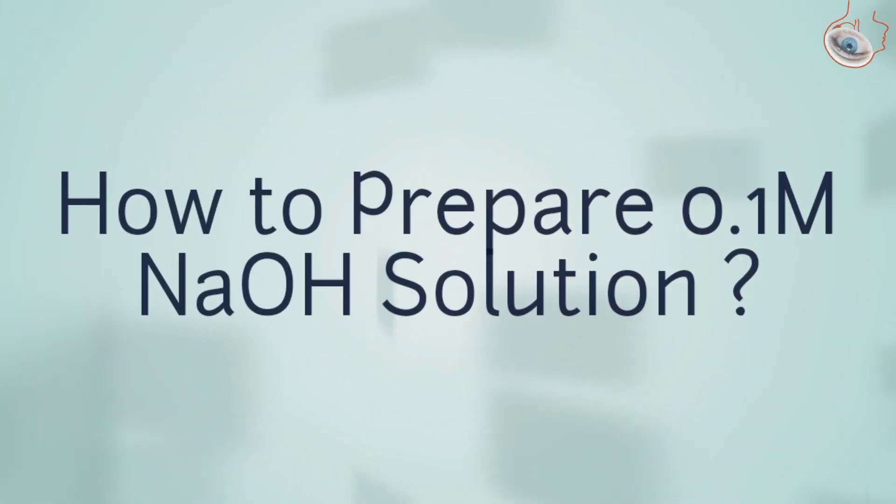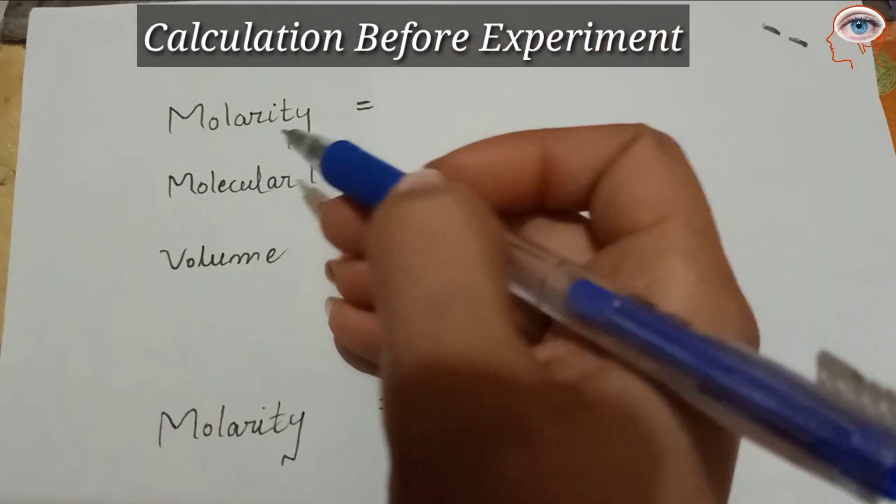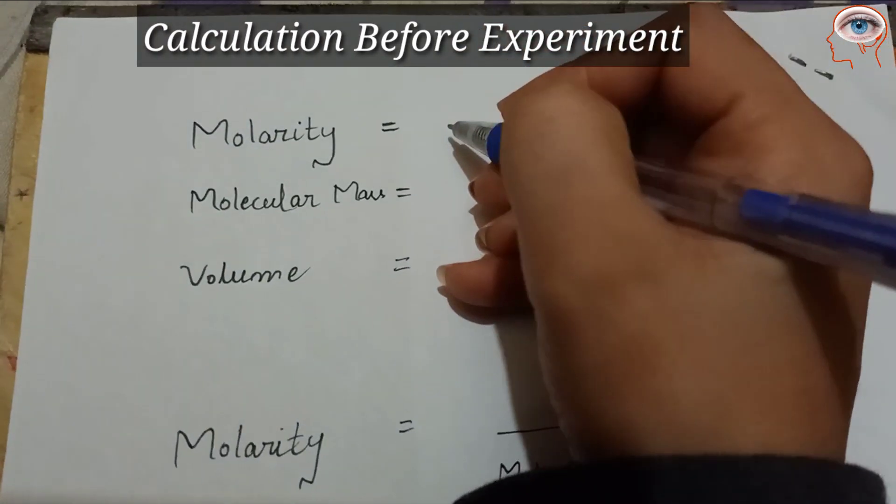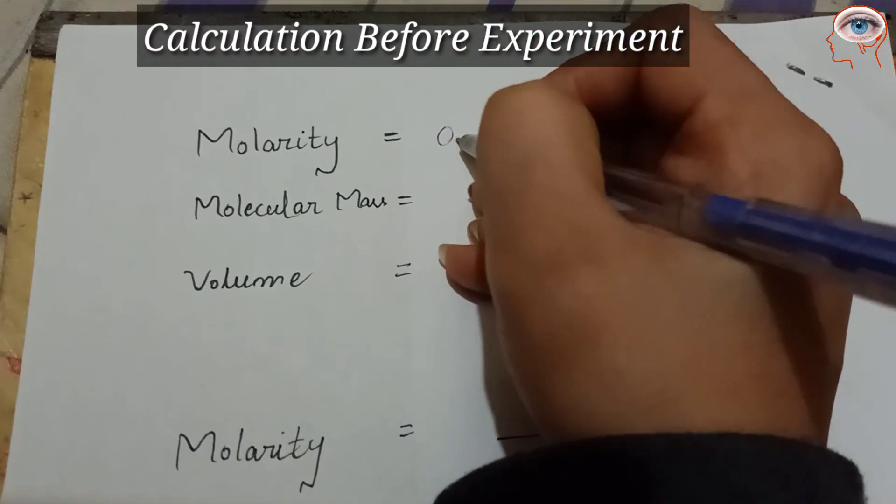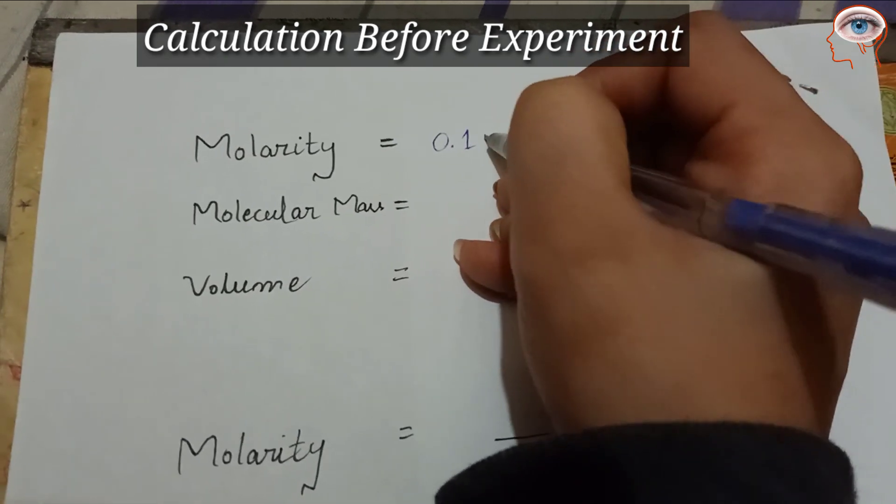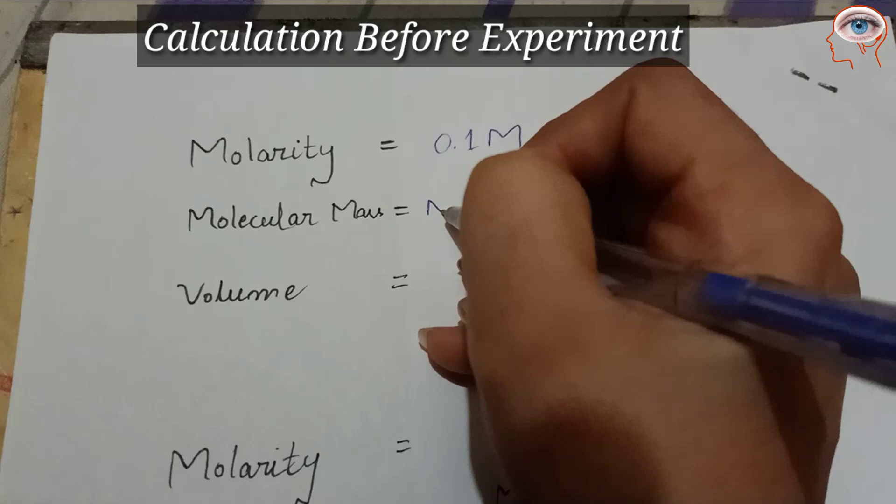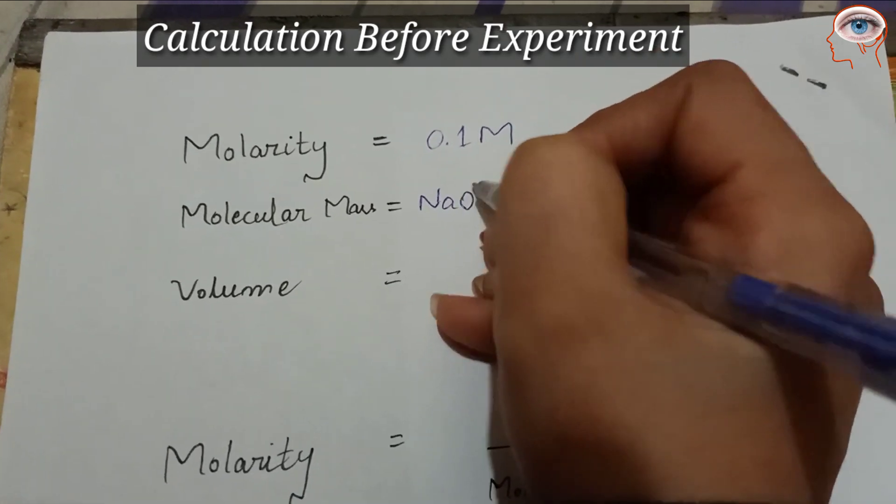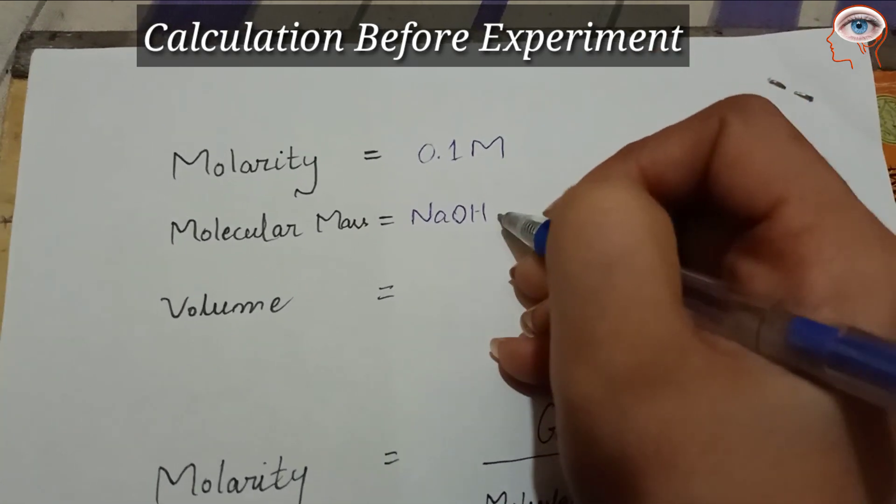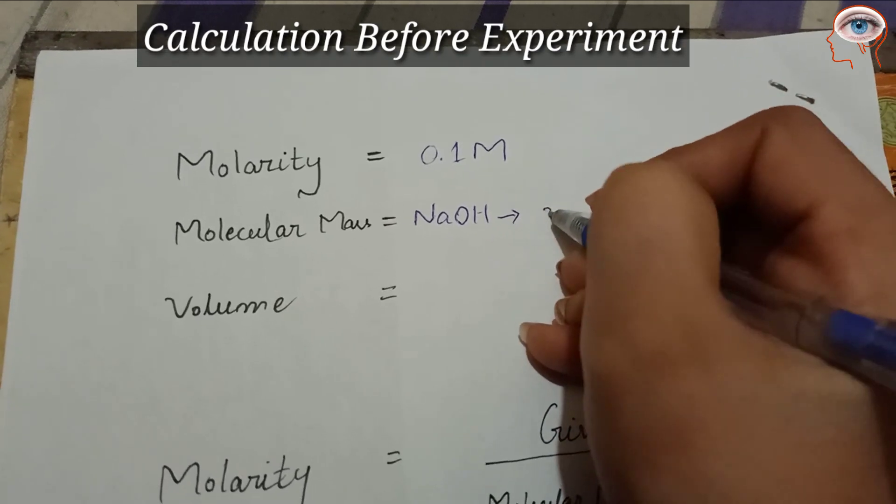How to prepare 0.1M NaOH solution. Calculations before experiment: molarity of the solution will be 0.1 molar. Molecular mass: we have to calculate the molecular mass of NaOH by summing up the atomic masses.